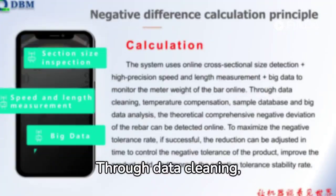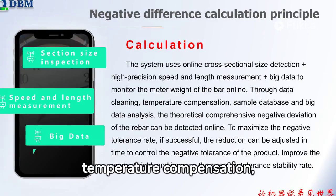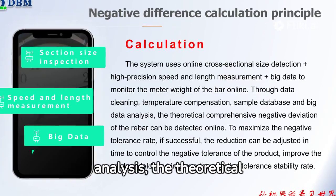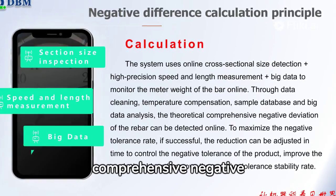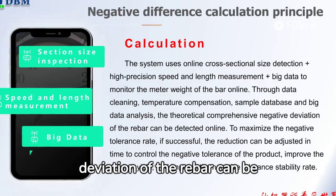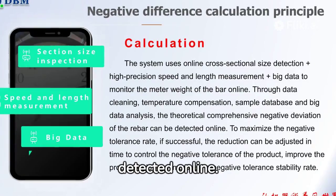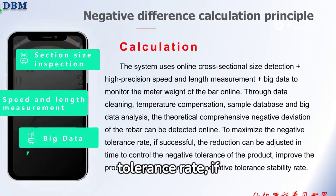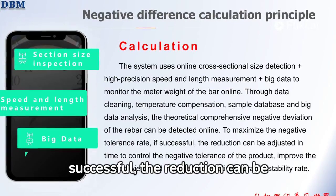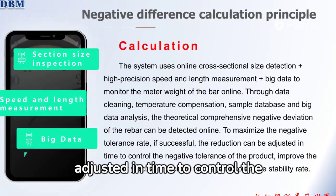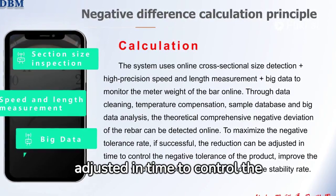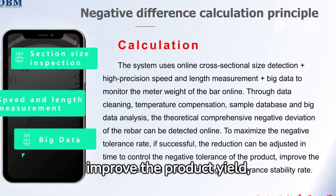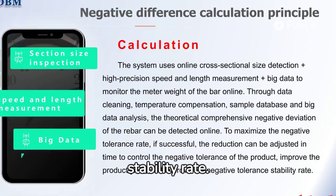Through data cleaning, temperature compensation, sample database, and big data analysis, the theoretical comprehensive negative deviation of the rebar can be detected online to maximize the negative tolerance rate. If successful, the reduction can be adjusted in time to control the negative tolerance of the product, improve the product yield, and improve the negative tolerance stability rate.